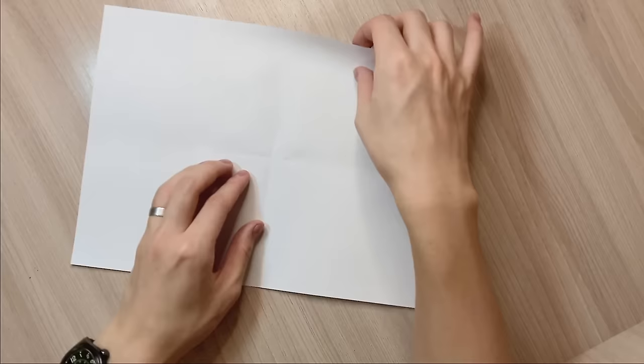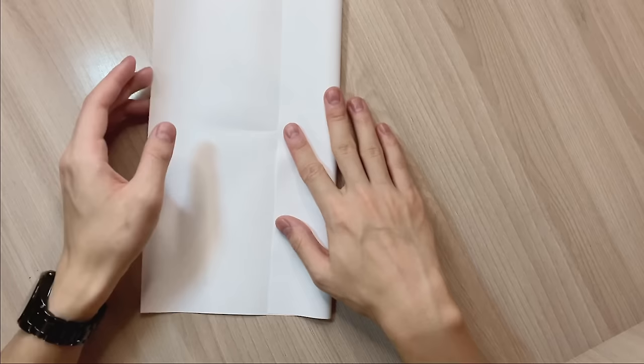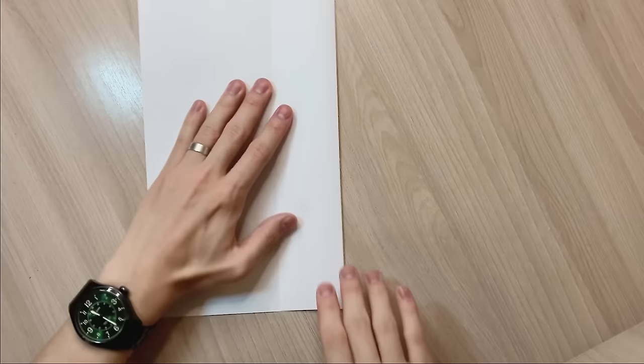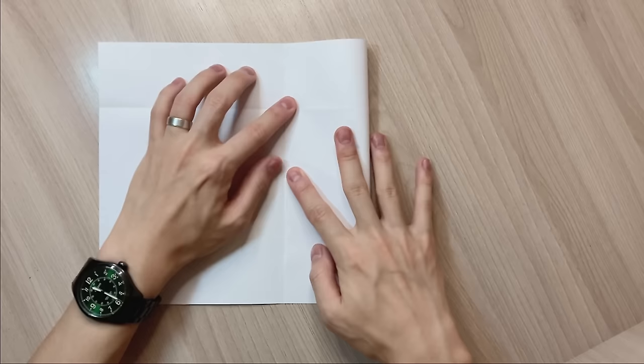The next step you're gonna take the long side and fold it towards the center. Then you're gonna unfold the paper and then fold the short sides towards the center. And do it on both sides.